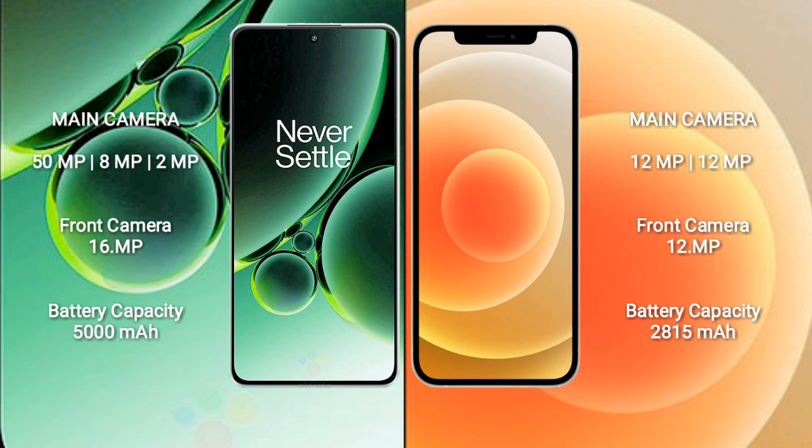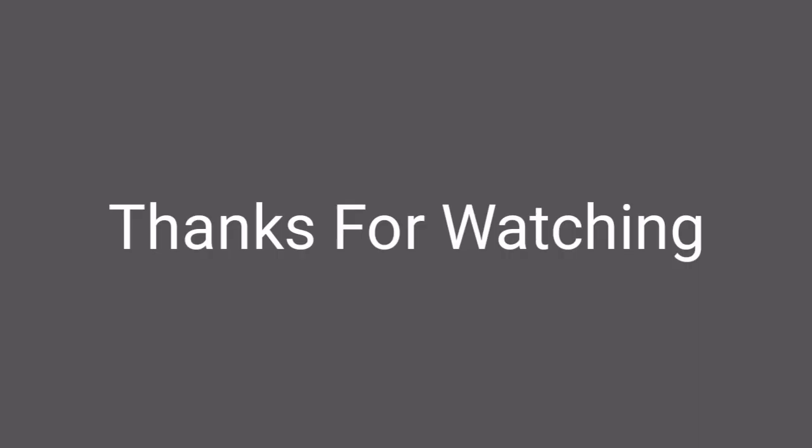OnePlus Nord 3 has a 5000mAh battery with 80W fast charging support. iPhone 12 has a 2815mAh battery with 20W fast charging support.